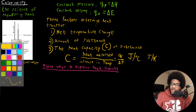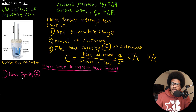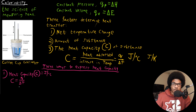There are three ways to express heat capacity. The first is the regular heat capacity C, with units of joules per degree Celsius. From the definition C equals Q over delta T, you can solve for heat as Q equals C times delta T — heat capacity times the change in temperature.